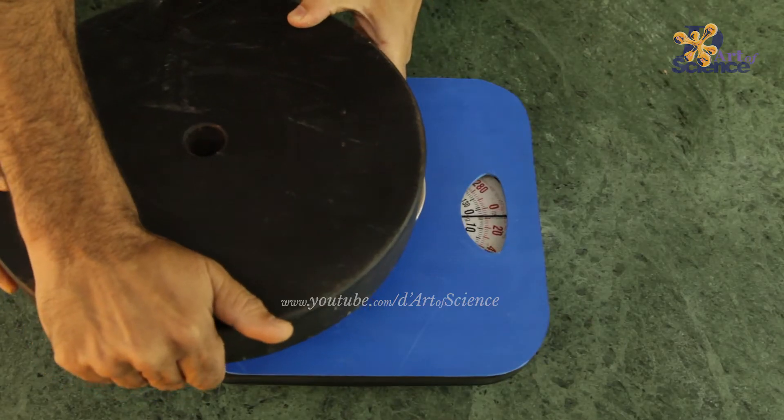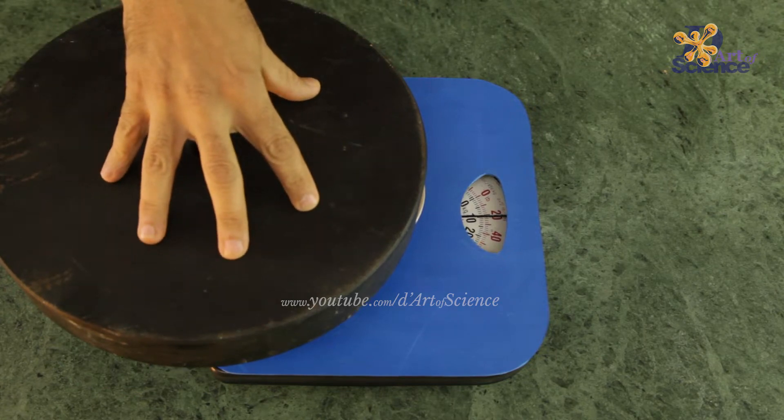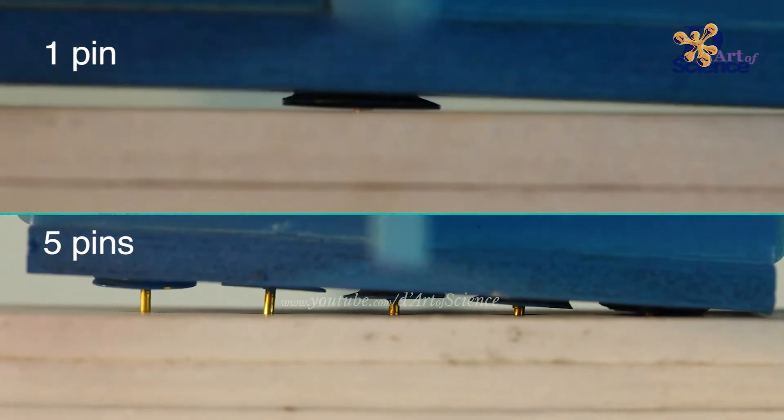And similar to grams and kilograms, if the pressure is 1000 pascals then it can also be called 1 kilopascal. So now we know that pressure depends on two things. Amount of force being applied and the amount of area on which the force is being applied.